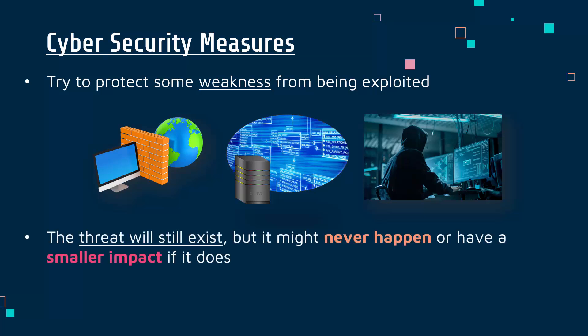Some measures we put into place will be more effective than others — some might not even work. But even if we have a really effective security measure, the threat will still exist. The attacker is not going anywhere, but they may be put off enough or it may be too hard for them, so the attack might never happen. Or if it does happen and the attacker can still break through your measure, it might just have a smaller impact — maybe they can access fewer tables in your database.